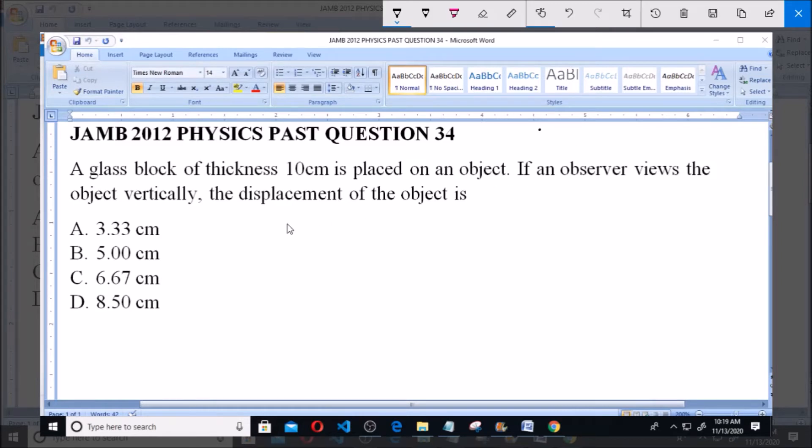We have to calculate the displacement of an object as viewed from a glass block of thickness 10 cm. When the glass block is placed on top of an object, what will be the displacement when an observer views it vertically through the glass block?